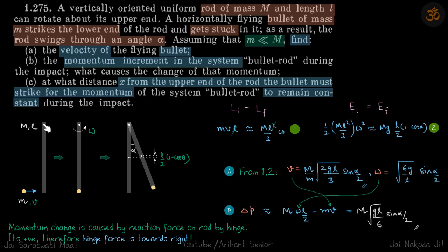And if that is the case, the hinge is preventing that – that means the hinge will put a force towards right, and that impulse to the rod and particle system. So that impulse from the hinge reaction will cause an increment in momentum, and that's what happened here. That's what I've written here: momentum change is caused by reaction force on rod by hinge. It's positive, therefore hinge force is towards right.